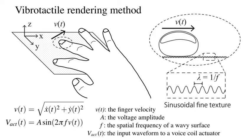we use the vibrotactile stimulation assuming a wavy surface as shown in the figure. This method is commonly used for the representation of surface roughness of textures such as cloths and papers in virtual environments.